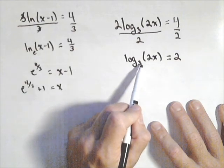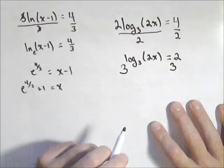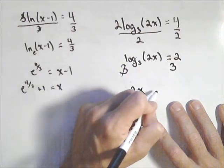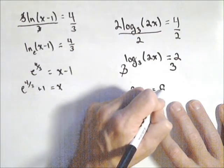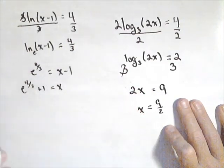Now I'm gonna rewrite it with a base of three. Or if we want to use that other property, I'm gonna make both sides exponents of three. Essentially those cancel. And I get two x equals three squared, or nine. Or that x equals nine halves.